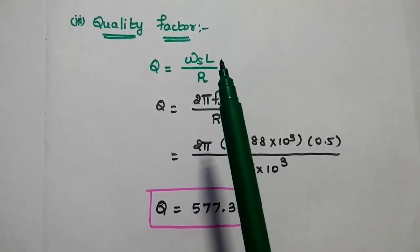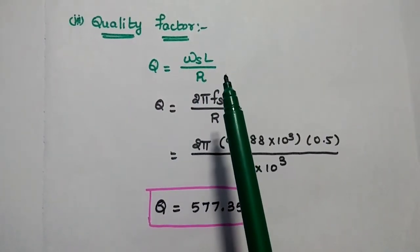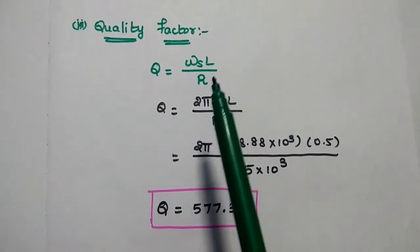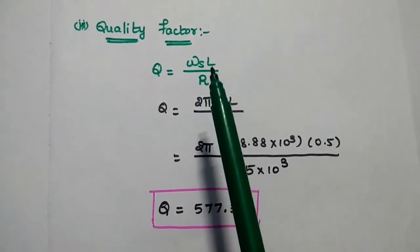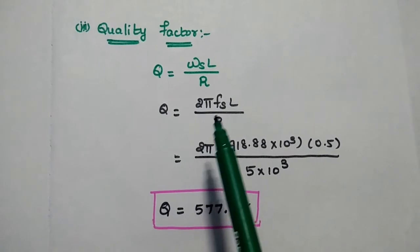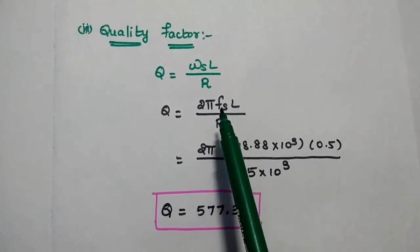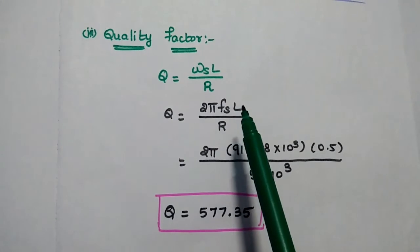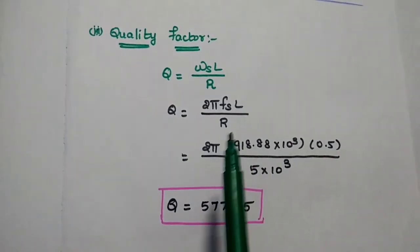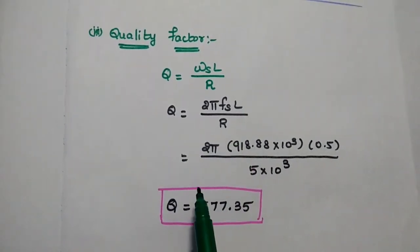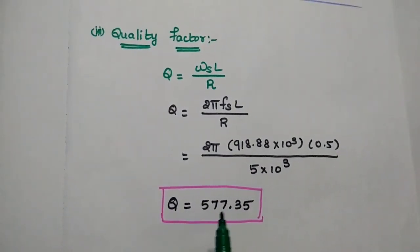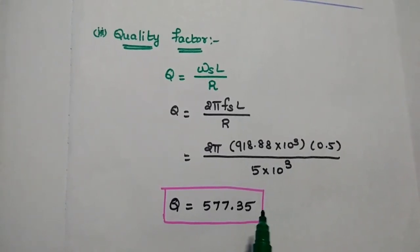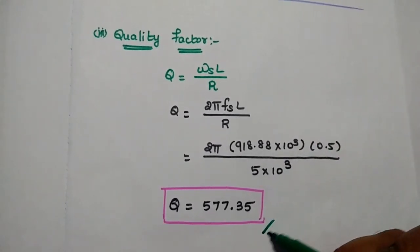The last one is the quality factor of the crystal oscillator. Q is equal to omega S times L divided by R, where omega S can be written as 2 pi Fs. Substituting the values of series resonant frequency, inductance, and resistance, we get the quality factor Q equal to 577.35. This is the final answer.